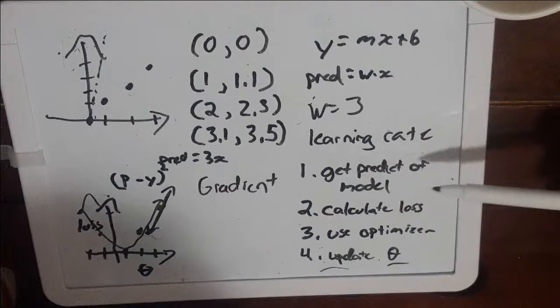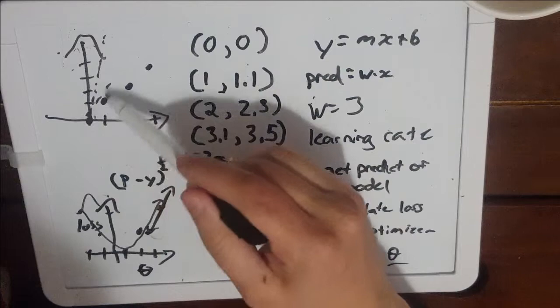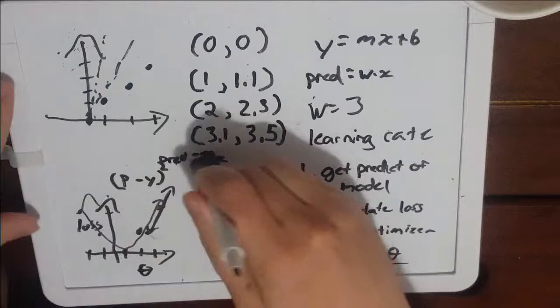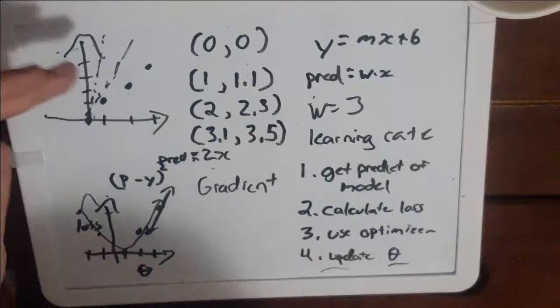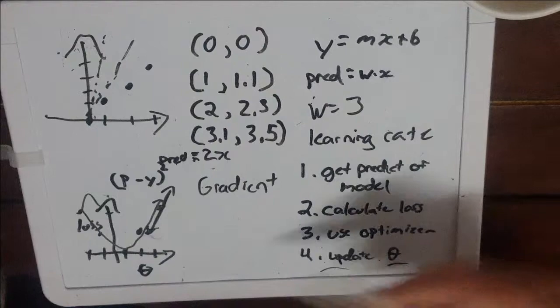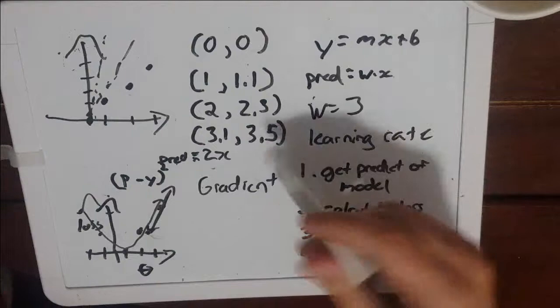And that is basically our algorithm. So what we do is we'll maybe land on two and then we'll go right back to step number one which is get a prediction of the model. Maybe we'll do a line like this. We calculate our loss. We change this to a two. Our prediction model is now going to be 2x. We calculate our loss, we use our optimizer gradient descent to shift in the direction that's going to give us closer to zero, and then we're going to update it again. So then maybe we're here, we update it and we're going to land on one. We update our parameters.